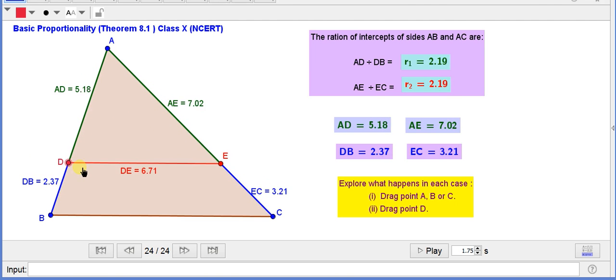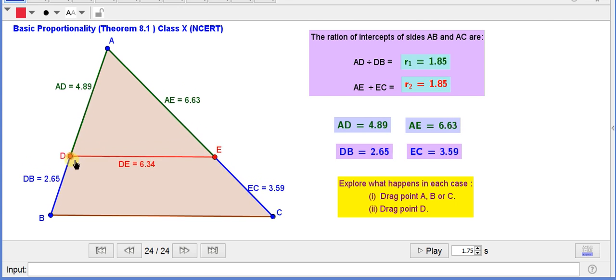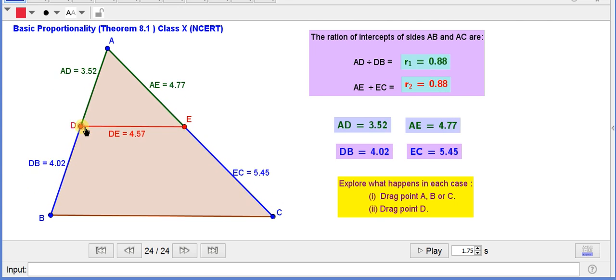When DE is changing, when DE moves up and down, then we see all the way six values are changing.